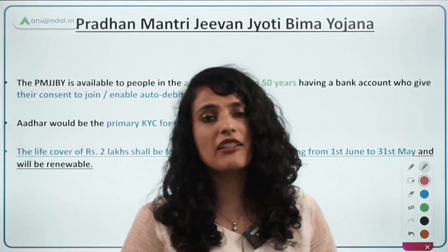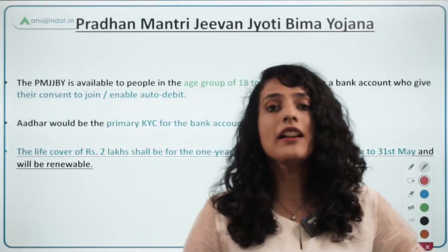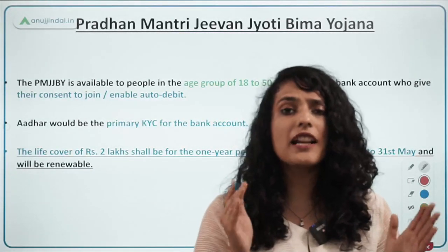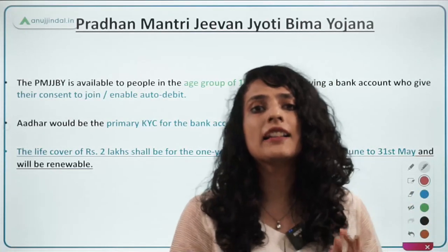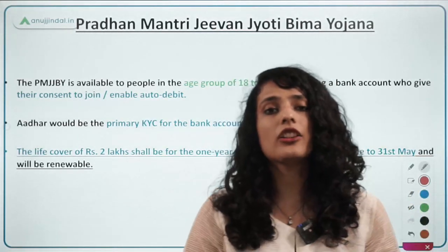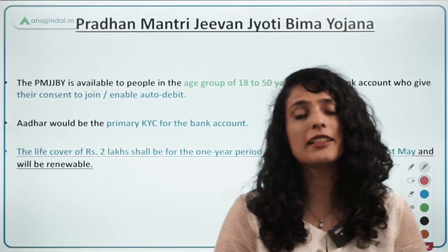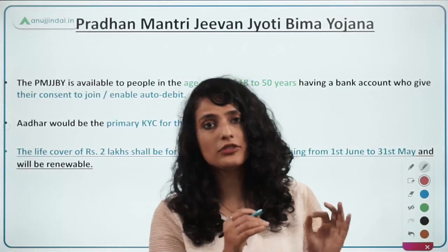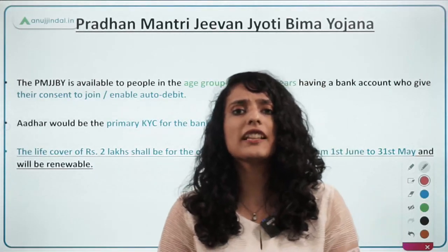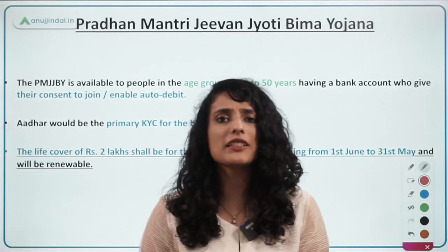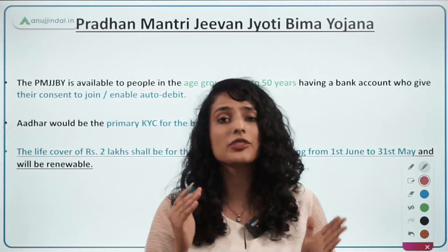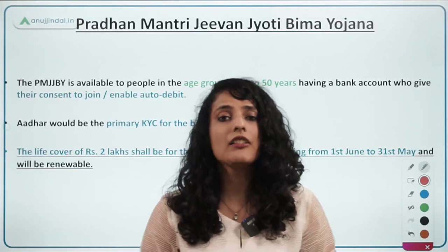For example, the Pradhan Mantri Jan Dhan Yojana introduced by the Government of India not only ensures that beneficiaries are financially included — the unbanked get a bank account opened — they also get a Rupay-enabled debit card, and along with that debit card under Jan Dhan Yojana, a one lakh rupee life insurance is given to the beneficiary. Through these initiatives, the government is not only ensuring financial inclusion but also creating a market for insurance.